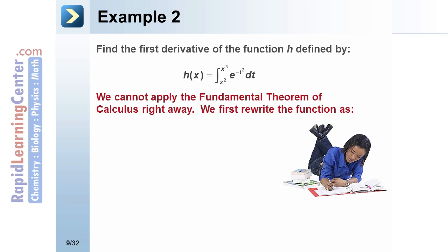We cannot apply the Fundamental Theorem of Calculus right away. We first rewrite the function as h of x equals the integral from x squared to 0 of e to the negative t squared plus the integral from 0 to x cubed of e to the negative t squared. This equals negative g of x squared plus g of x cubed.